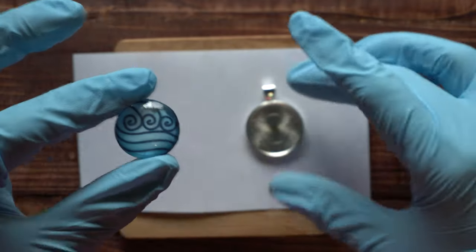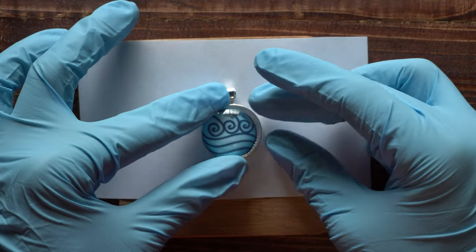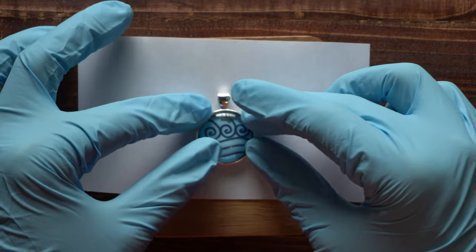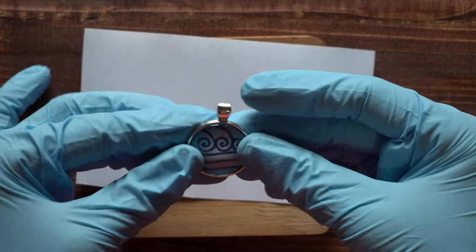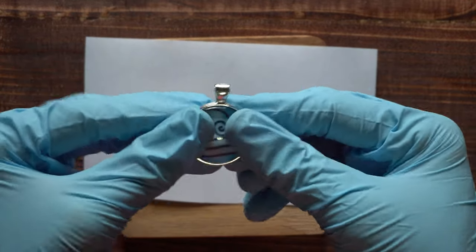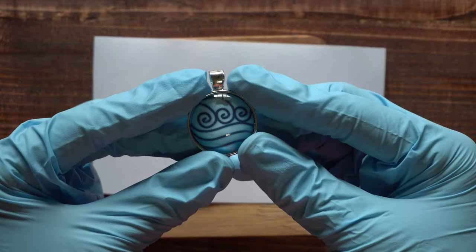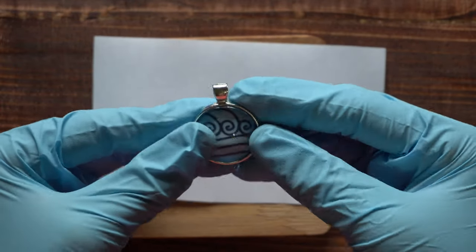Next, you're going to press the dome into the pendant. When doing this, make sure everything's aligned first before pushing down. Once you push down, it's hard to adjust. Once you have it in the right position, go ahead and push down firmly and make sure it's completely flat.